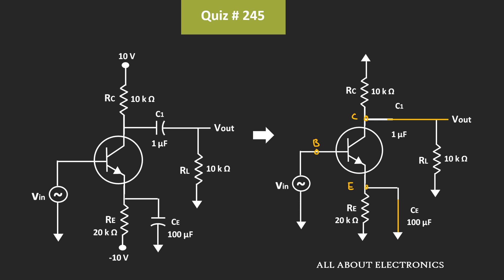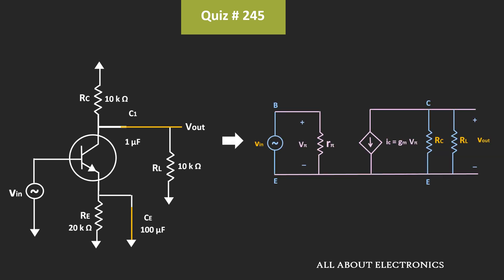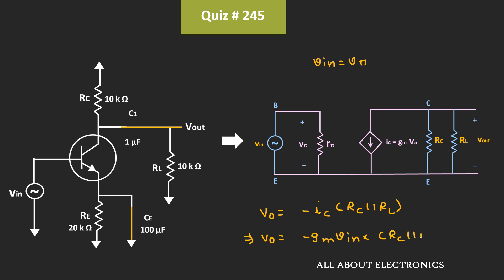Now if we see the AC equivalent circuit, then it will look like this. The input voltage is connected between the base and the emitter terminal, while this collector resistor is connected between the collector and the emitter terminal. For the given circuit, Vout can be given as minus IC times RC parallel RL, where IC is equal to Gm times Vπ. And if you see here, this input voltage Vin is equal to Vπ. That means Vout is equal to minus Gm times Vin times RC parallel RL.